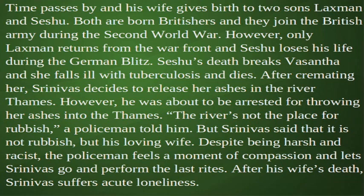Sheshu's death breaks Vasantha and she falls ill with tuberculosis and dies. After cremating her, Srinivas decides to release her ashes in the river Thames. However, he was about to be arrested for throwing her ashes into the Thames. 'The river's not the place for rubbish,' a policeman told him. But Srinivas said that it is not rubbish but his loving wife. Despite being harsh and racist, the policeman feels a moment of compassion and lets Srinivas go and perform the last rites.